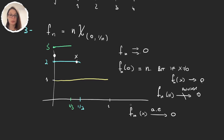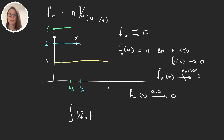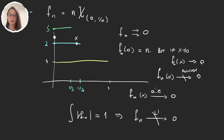Now let's check L1. The integrals of these functions are always 1, because we have 1×1, then 2×(1/2), then 3×(1/3), and so on — always equal to 1. So fn does not converge to 0 in L1. This shows almost everywhere convergence does not imply L1 convergence.